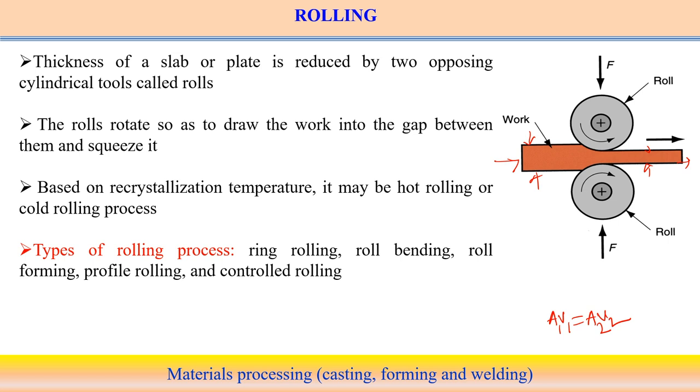Based on the recrystallization temperature, we can determine whether it is hot rolling or cold rolling. The rolling technique is the same, but deformation can be performed at high or low temperature. Different types of rolling operation exist: ring rolling, roll forming. Based on the temperature of deformation, rolling operation can be hot rolling or cold rolling. We will discuss these different rolling operations when explaining the bulk deformation process.